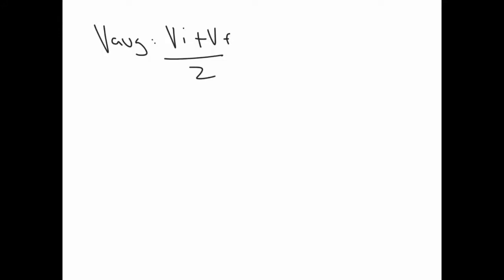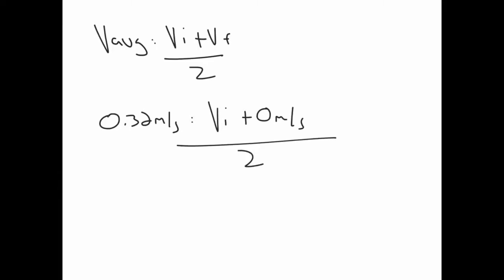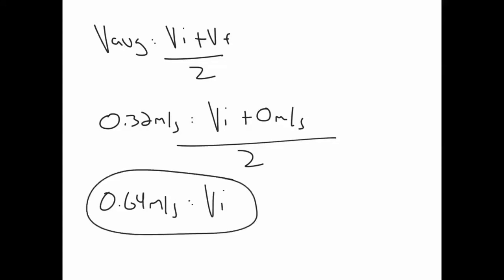We have everything we need here because we know our average velocity is displacement over time. We want to solve for initial velocity, and the final velocity is zero because our car started moving quickly and slowed down to zero. So our V-average of 0.32 meters per second equals V-initial plus zero, divided by two. The zero goes away, and we bring the two over, so our initial velocity is 0.64 meters per second. That's how fast our dart and car were moving right when the collision occurred — this is the velocity you would want to use when finding the momentum of your dart-car combo.